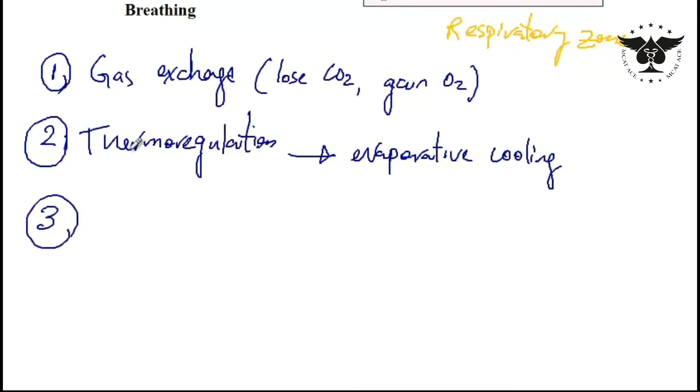And finally the third function of the respiratory system is to regulate pH. In order to understand the role of the respiratory system in pH regulation I have to discuss some chemistry concepts. CO2 can be combined with water with the help of the carbonic anhydrase enzyme in order to yield carbonic acid, and carbonic acid can dissociate into bicarbonate ion as well as a hydrogen ion.